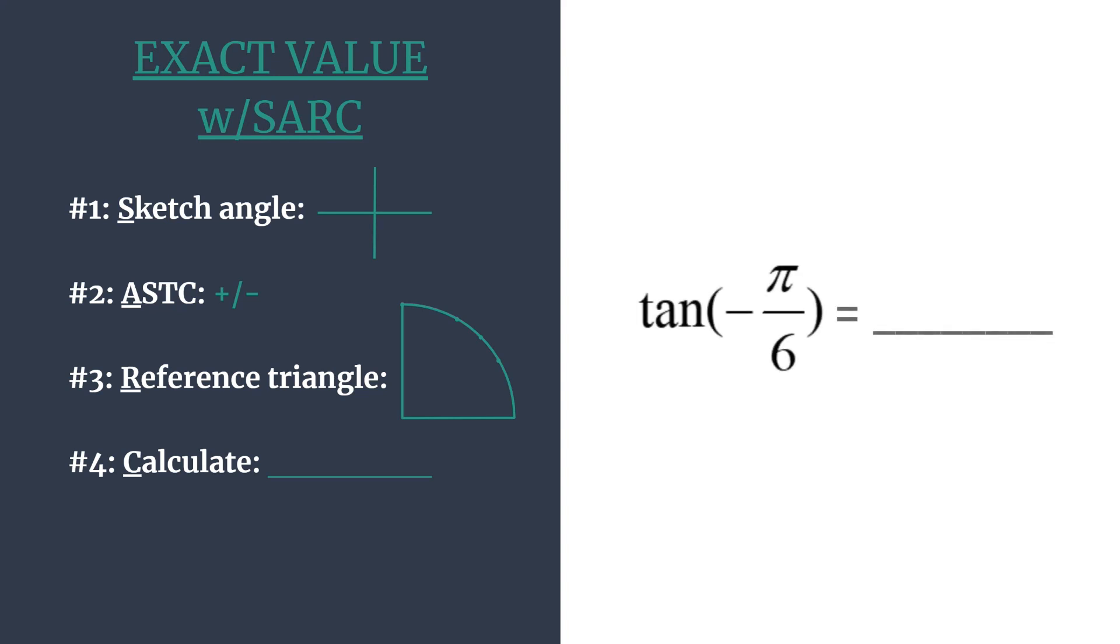Let's do this for tangent of negative π over 6. We start by sketching our angle. An angle with a negative sign means you rotate in the clockwise direction. From standard position, we rotate π over 6, which puts our terminal side in the fourth quadrant.